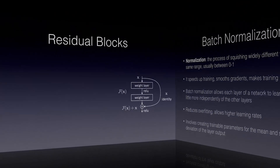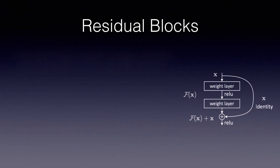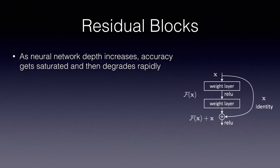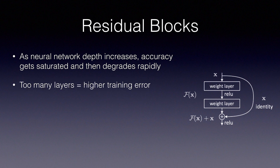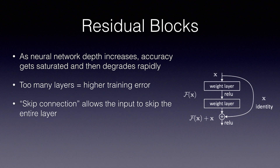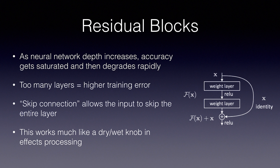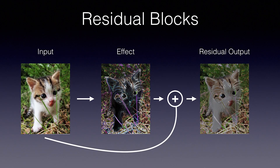The second concept is Residual Blocks. As neural network depth increases, accuracy gets saturated and then degrades rapidly. Too many layers leads to higher training errors since gradients get too small to be meaningful. The solution is a skip connection, which allows the input to skip the entire layer and get added to the output. This allows gradients to propagate through a very deep network and unlocks the full benefits of deep learning. This works much like a dry-wet knob in effects processing — it mixes the original signal back into the effect.